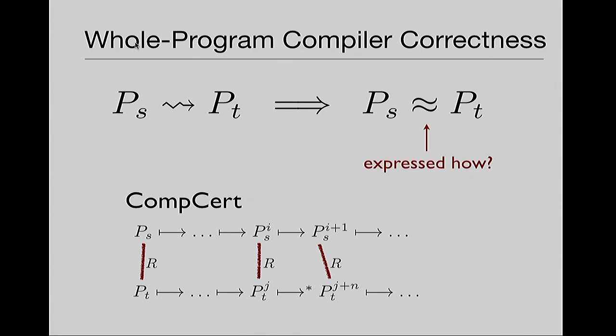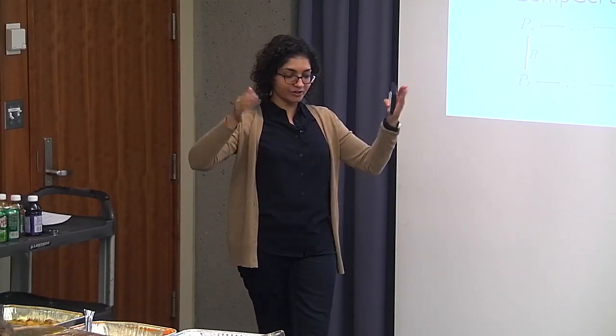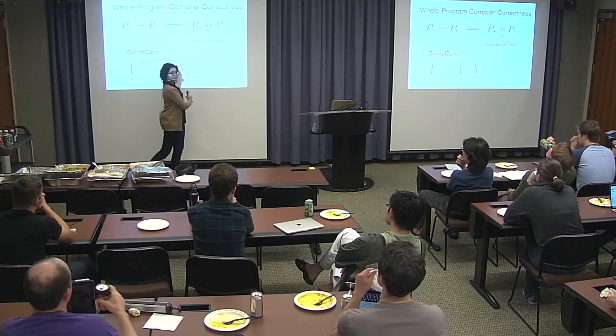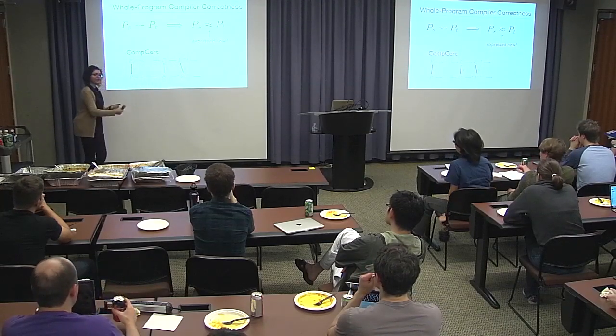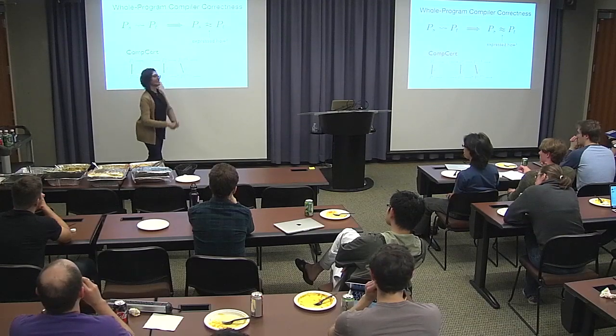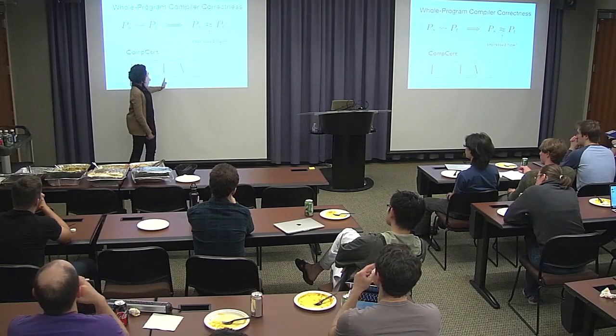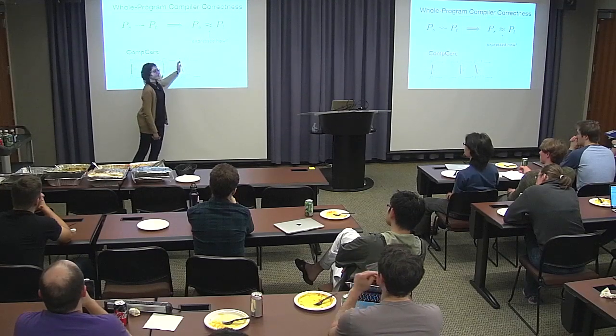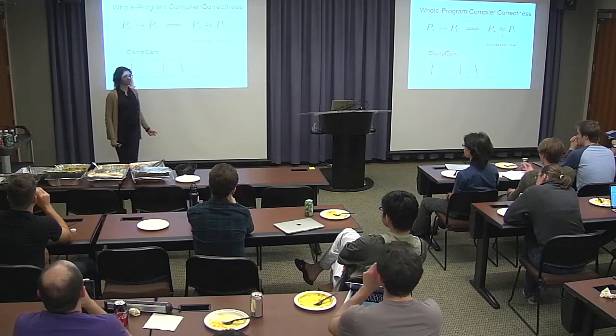So after each step, you don't rewrite the source program. This arrow is the operational semantics of the source language being used to evaluate the program. In the theorem itself, you're not actually running the program — you're talking about an arbitrary state your source program might be in and an arbitrary state your target program configuration might be in. You say, assume they're related. If we take a step, we want to show that the new configurations are related again.